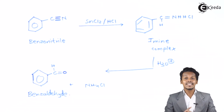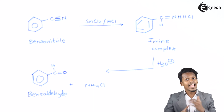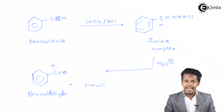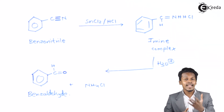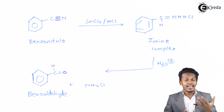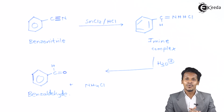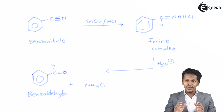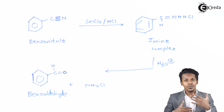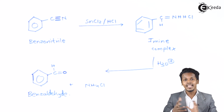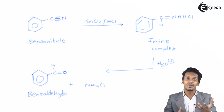So this was the preparation of aromatic as well as aliphatic aldehyde by using stannous chloride along with an alkyl cyanide. Thank you friends for watching this video. I hope you have understood the concepts behind how we can prepare an aliphatic as well as an aromatic aldehyde using Stephen's reaction.